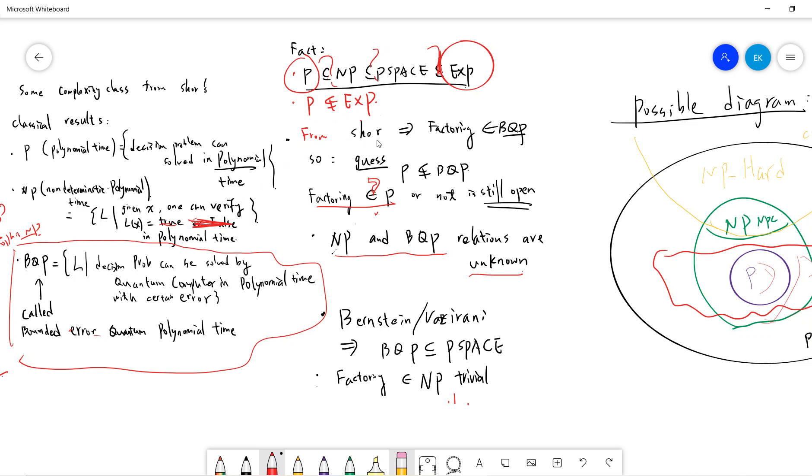From Shor's, we know that factoring belongs to BQP. One can ask whether P is strictly less than BQP. This is very important: whether quantum computers are actually better than classical computers in the sense that their complexity classes are different, are separate. But the reason is that factoring belongs to P or not, it's still open.